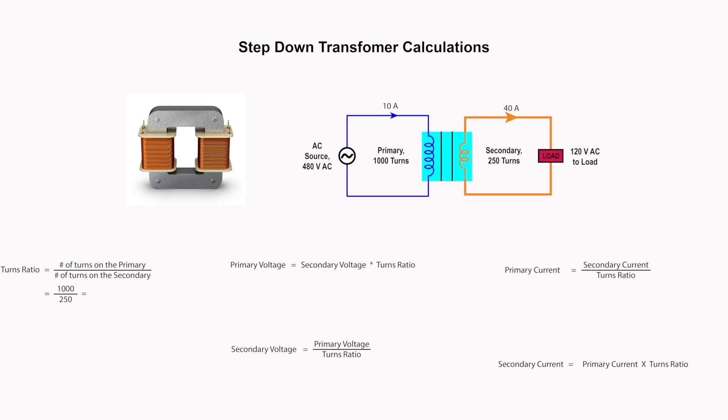Who is ready to do some calculations? Let's put what we learned so far into practice. Here is an example of how the previous equation can be applied. We'll do calculations using this example. To find the turns ratio, we divide the number of turns on the primary by the number of turns on the secondary. In this example, the turns ratio of this transformer is 4 to 1.